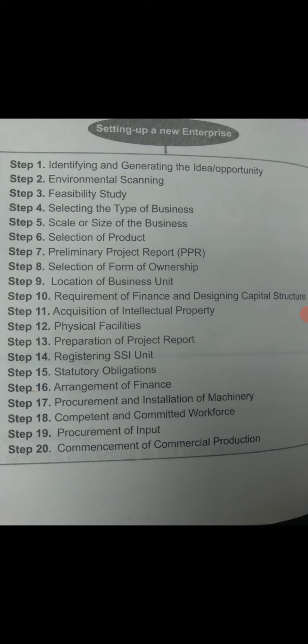The fifth step is scale or size of the business. The entrepreneur decides whether the business is going to be a small-scale or large-scale business, depending on how much capital is required, what demand is expected, and what the risk-bearing and management capacity is. The sixth step is selection of product. Product is the core of any organization.